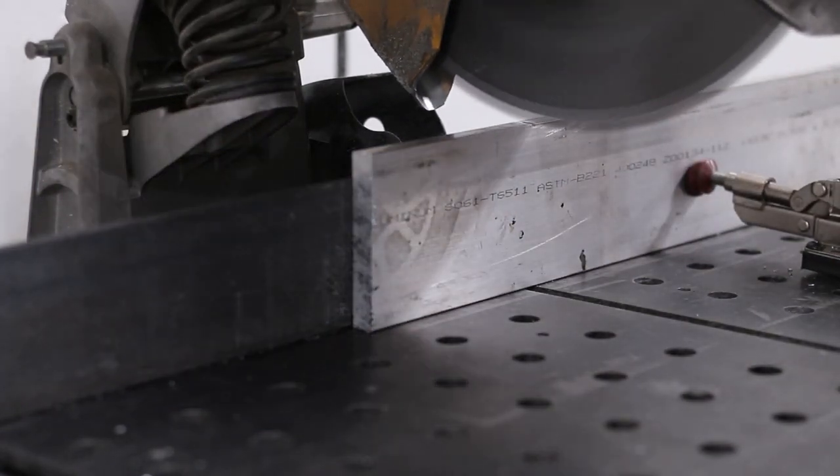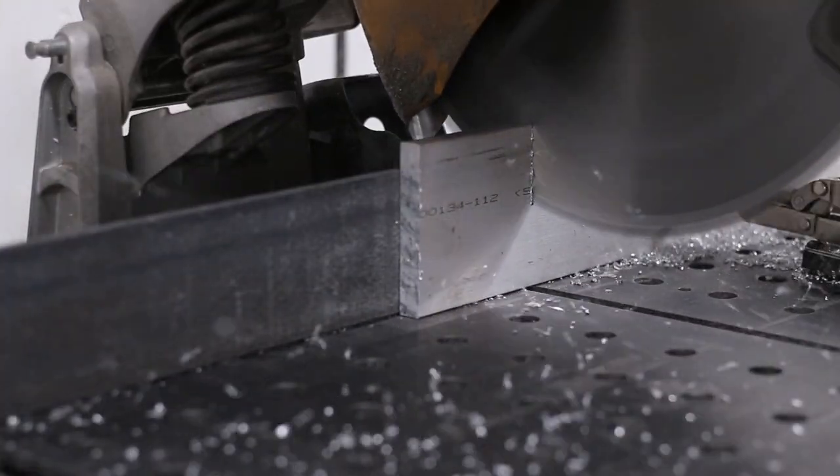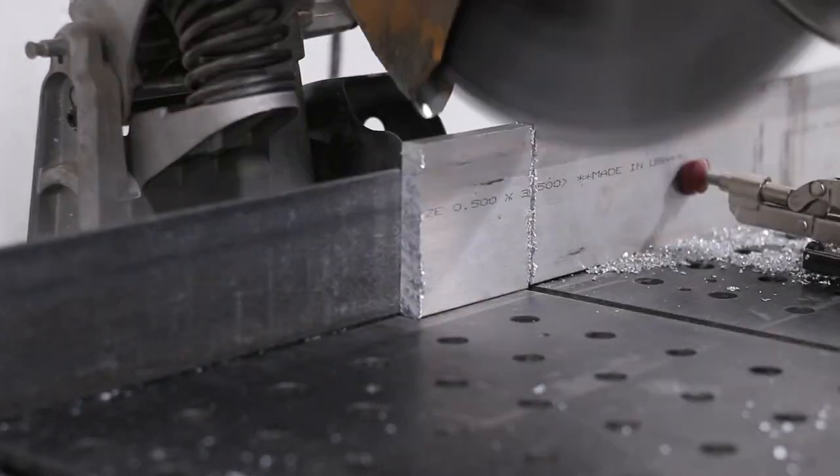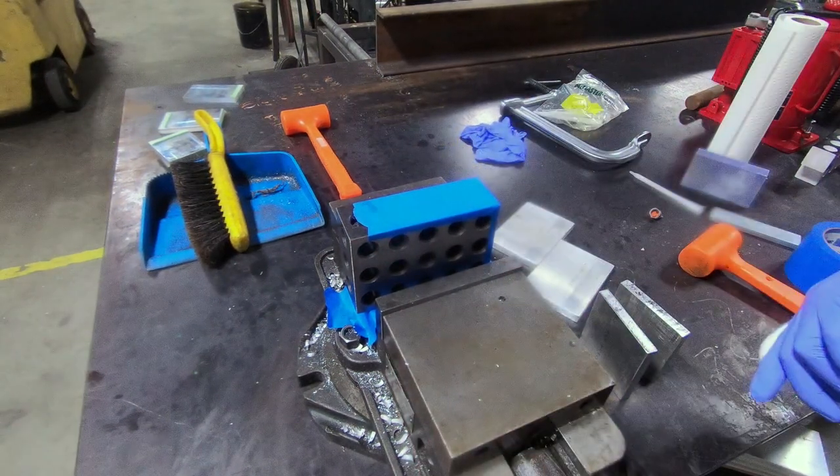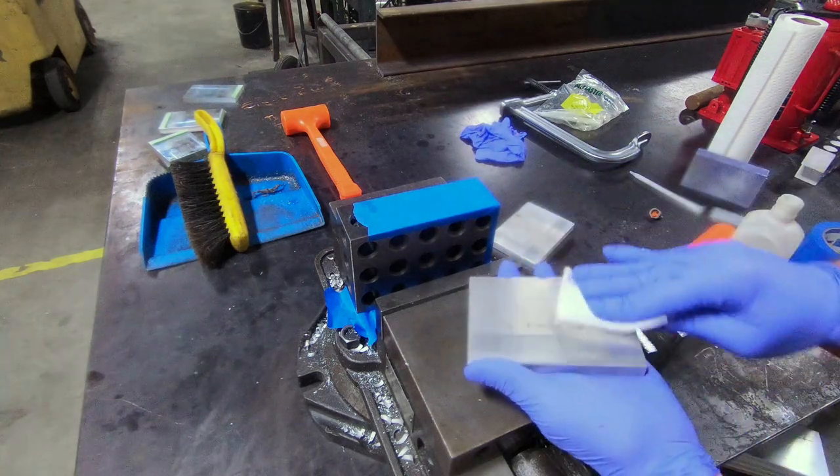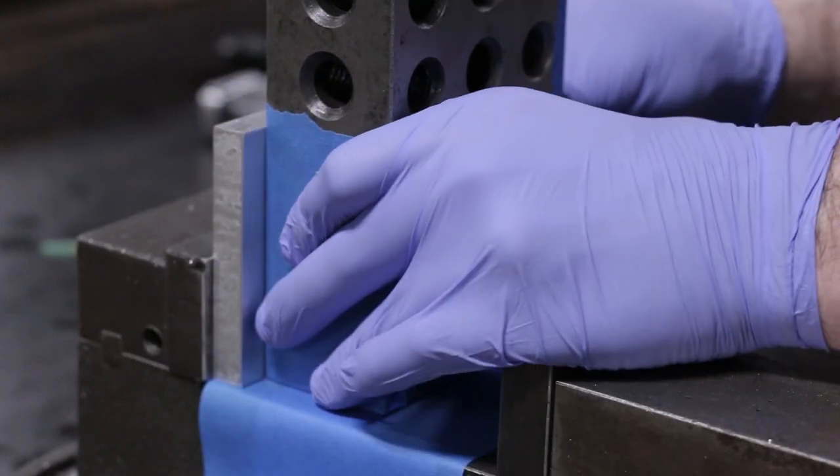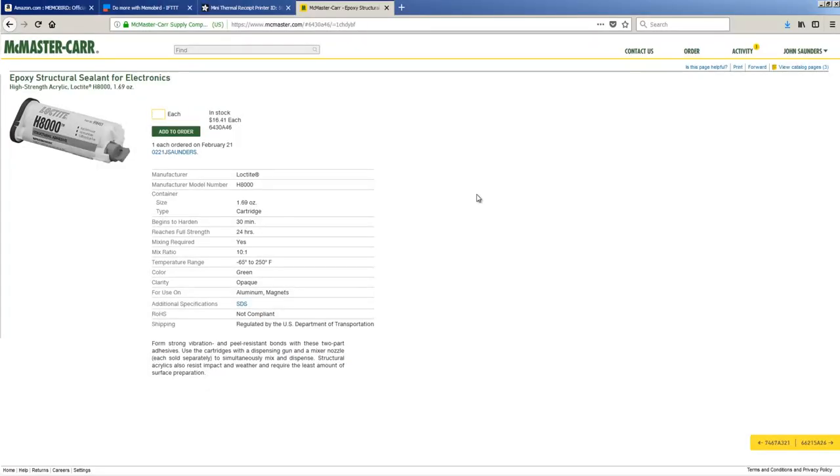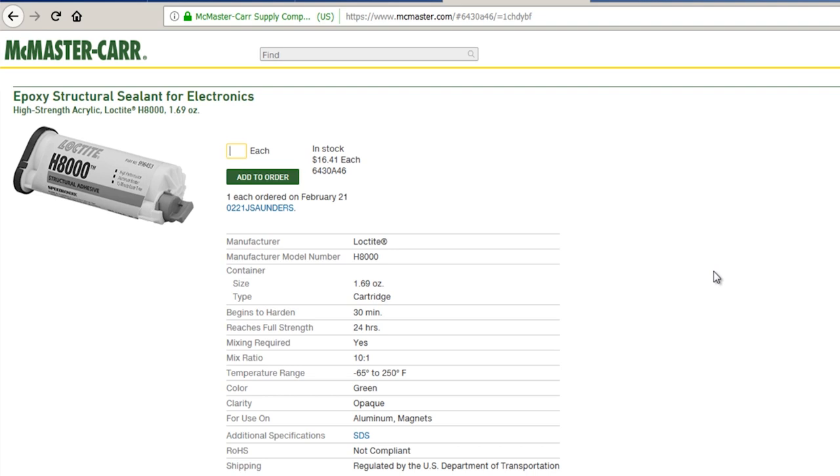We're going to cut up some scrap pieces of aluminum. These are readily available and really inexpensive and we're going to glue them together. And the key here is we live in a world with some amazing adhesive sealants and glues. This one is Loctite H8000. Its holding power is mind blowing, especially on aluminum.